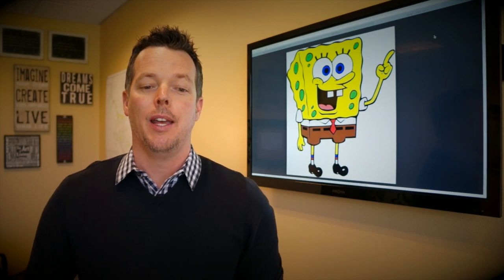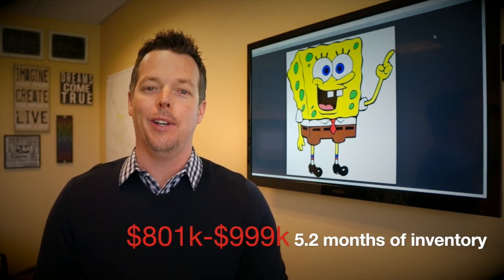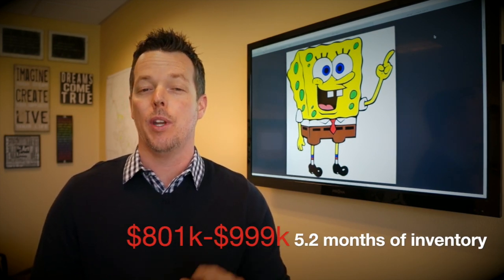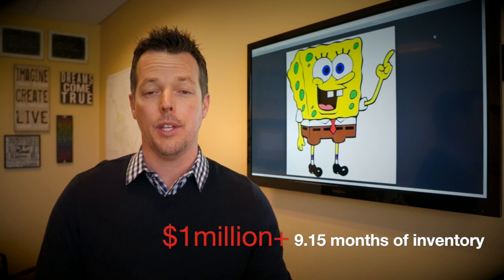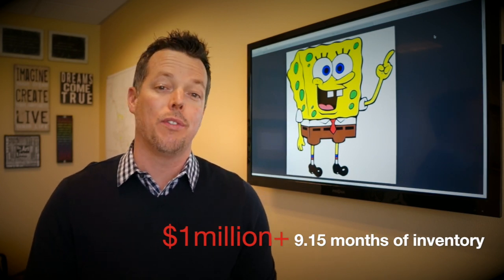It is going to take a lot longer to sell those homes than 17 days and that means buyers have more choices. $801,000 to $999,000, we've got a 5.2 month supply. And get this, it's no big surprise that over a million dollars, anything from a million dollars plus, we've got a 9 month supply of homes.